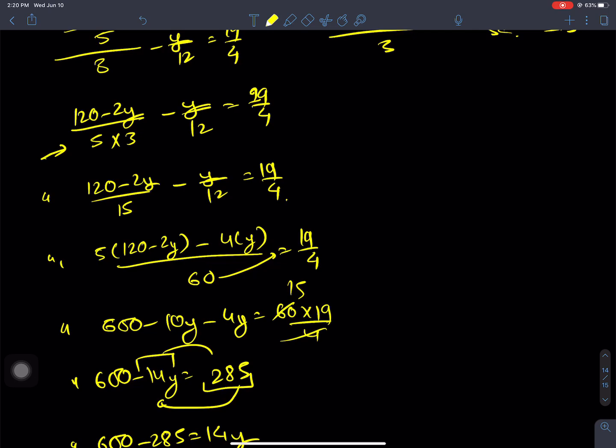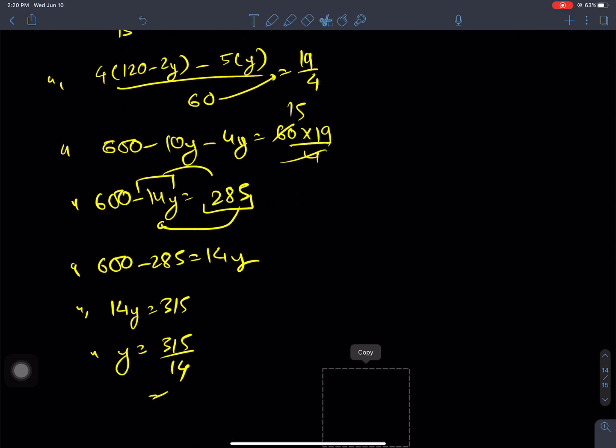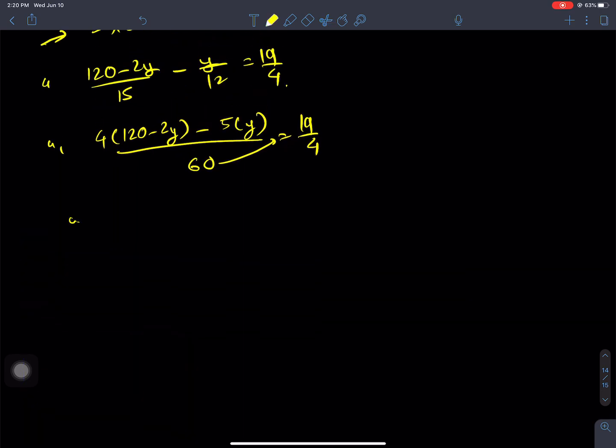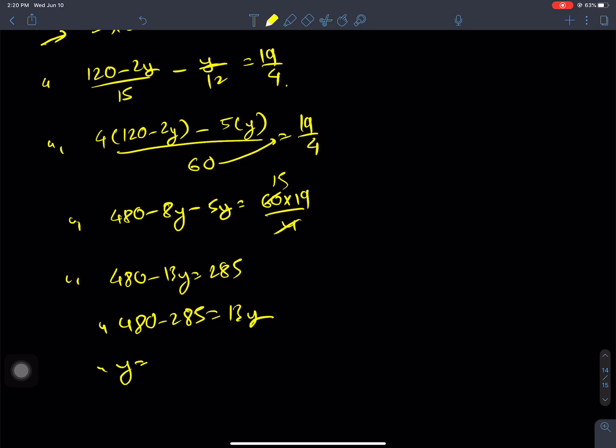The LCM of 15 and 4 is 60. We get 4(120 - 2y) - 60y = 60×19/4 = 285. So 480 - 8y - 60y = 285, which gives 480 - 68y = 285.